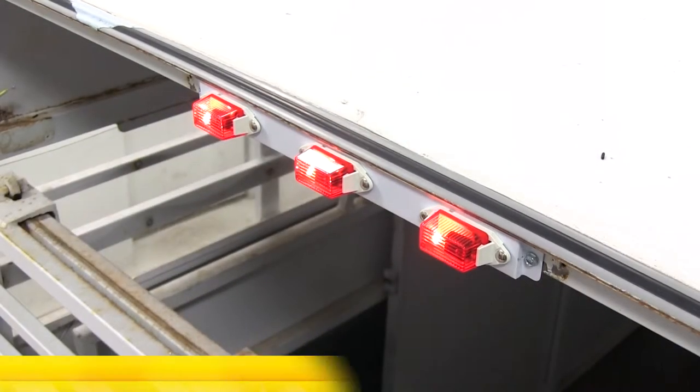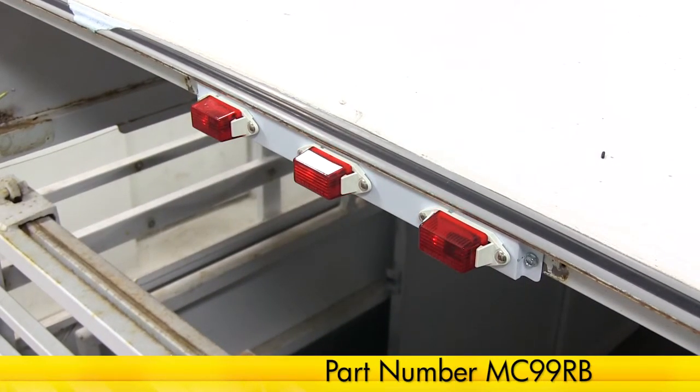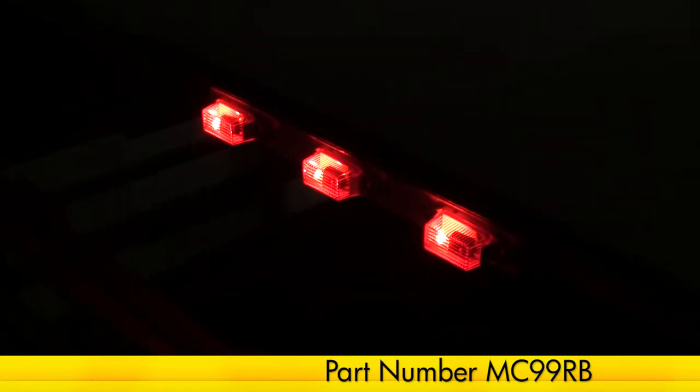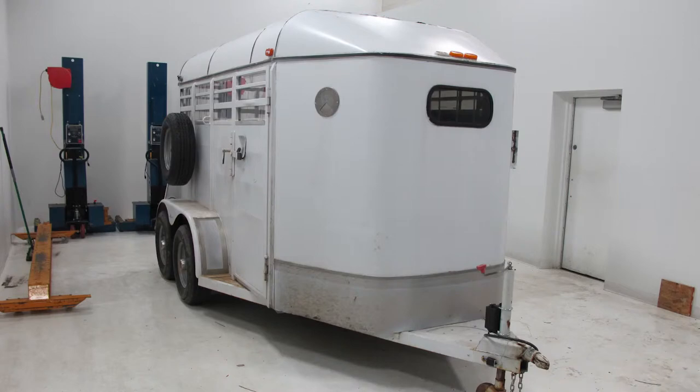And that'll do it for our installation of the Optronics Truck and Trailer Identification 3-Light Bar, part number MC99RB, on our enclosed trailer.